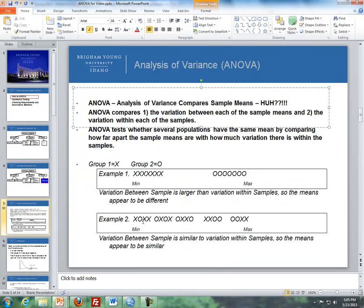However, if we have something like this where the X's and the O's are kind of meshed together, it appears the variation between the samples is similar to the variation within samples, so the means appear to be similar. This goes back to where ANOVA compares the variation between each of the sample means and the variation within each of the samples.